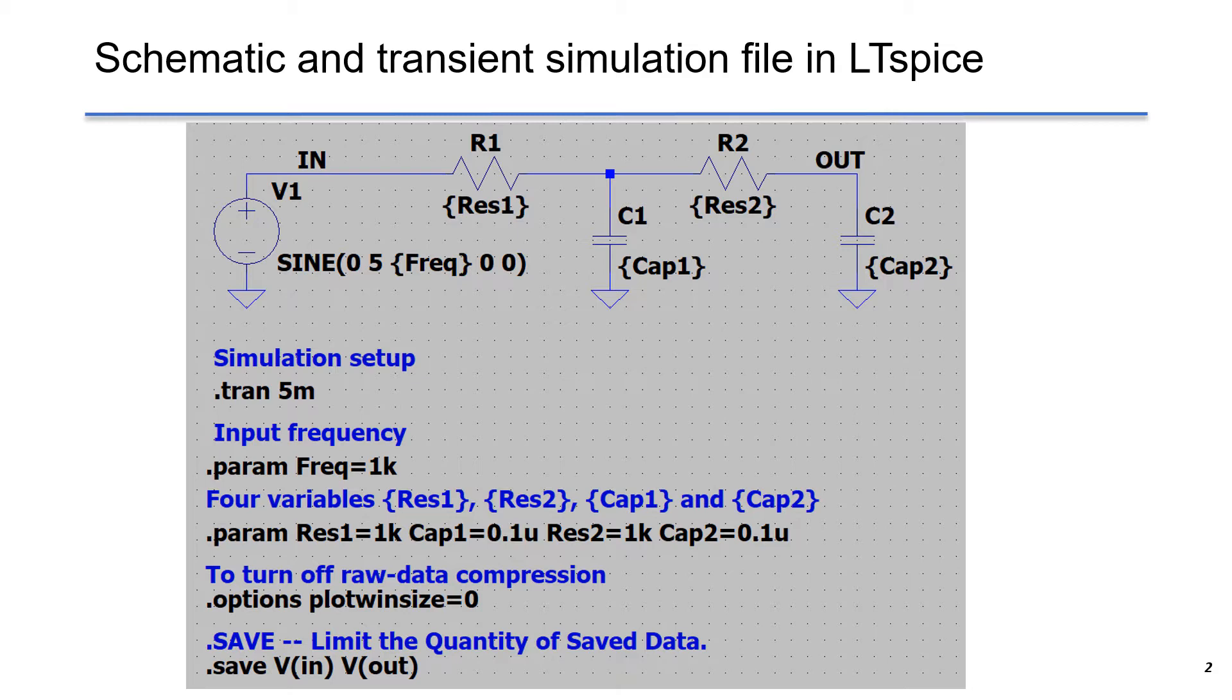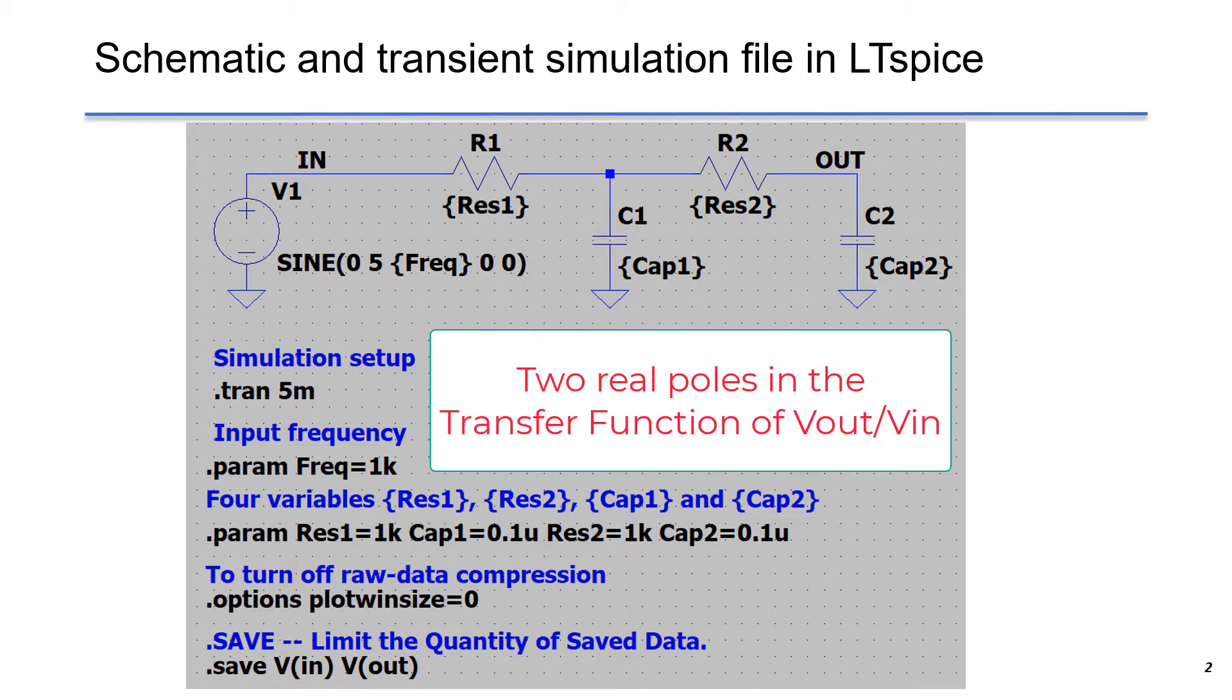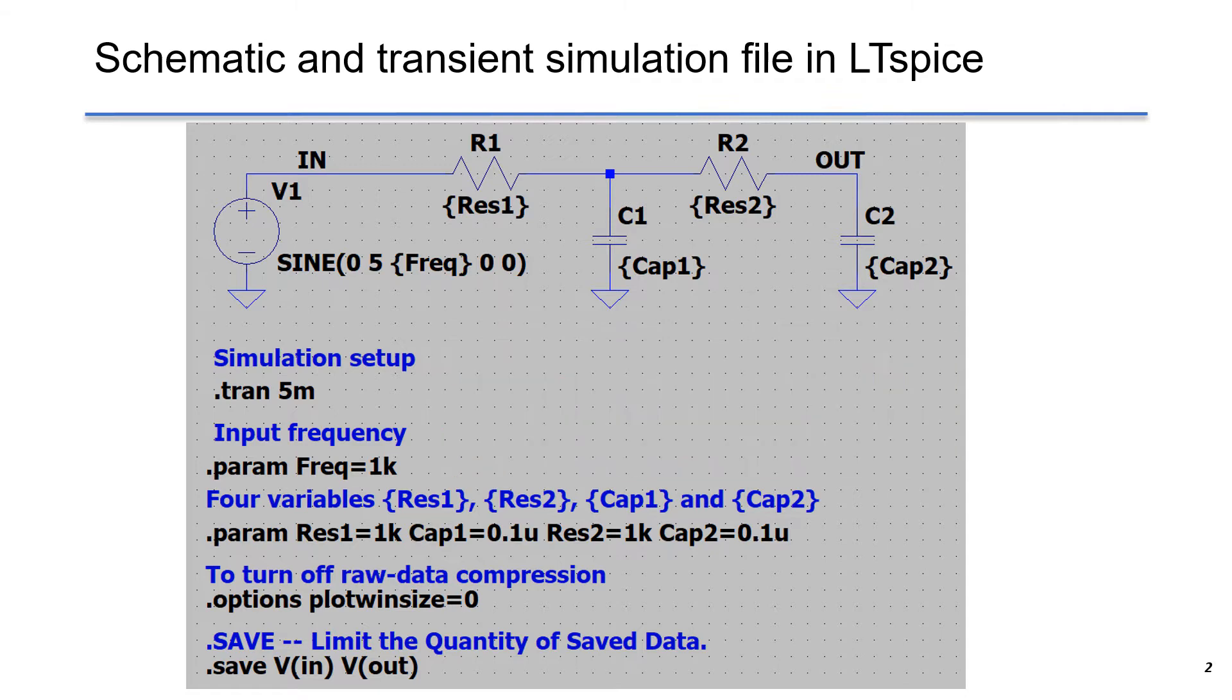Generally speaking, compared with the first-order RC filter, the second-order low-pass filter has two real poles that give more attenuation at Vout, as well as more phase lagging compared with the first-order low-pass filter.